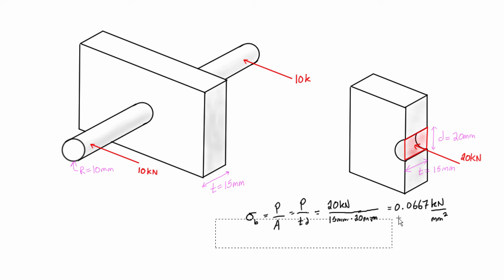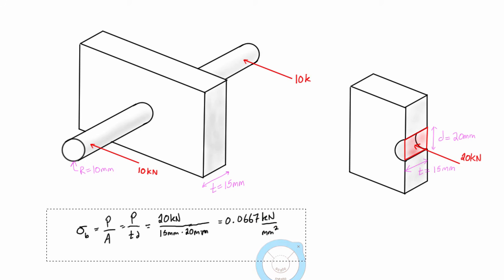And let's actually give ourselves some more space and move this over. And so if we just multiply this by a thousand, this is the way that I like to do it, so we'll get 66.67, or 66.7 newtons per millimeter squared.